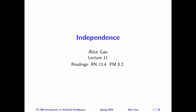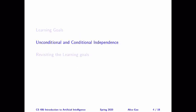Hello, everyone. This is Alice Gao. In this video, I'm going to do a short review of two important concepts in probability theory: unconditional independence and conditional independence. I'll first go over the formal definition of these two independence assumptions, then I will talk about why it is important to understand these definitions for constructing a Bayesian network.